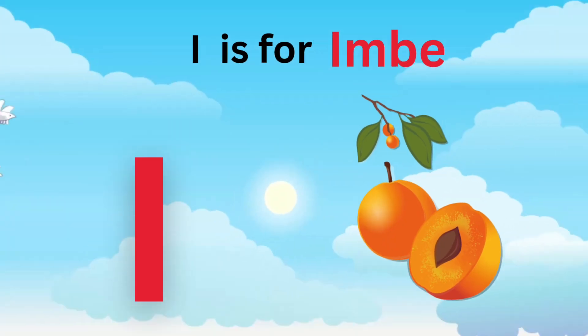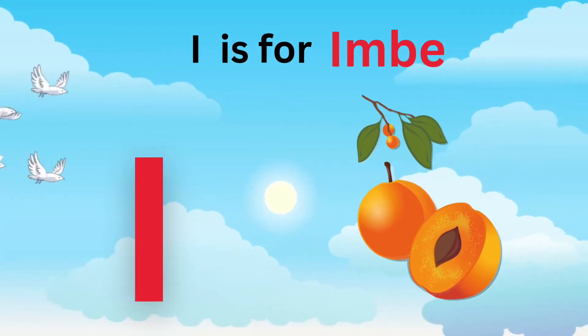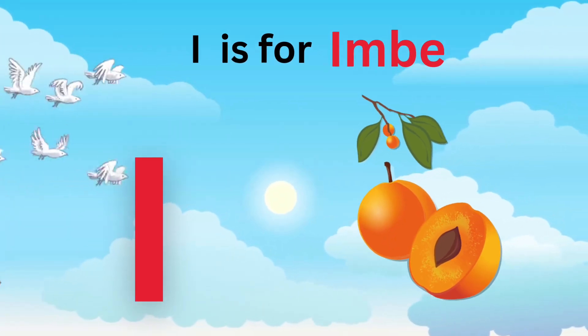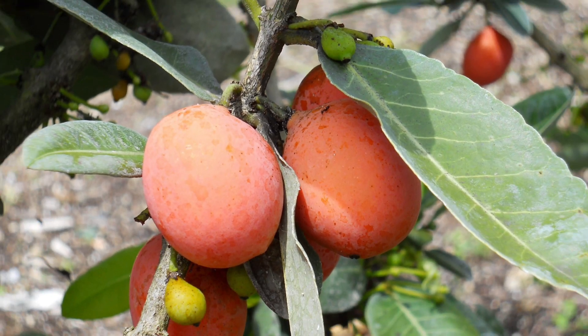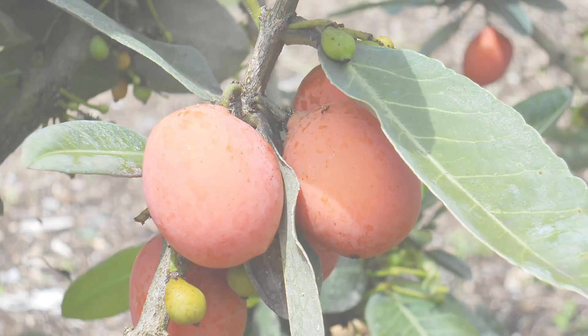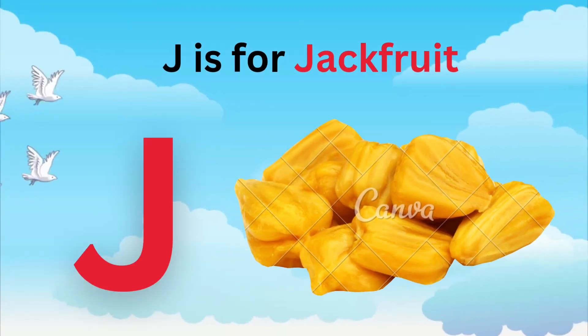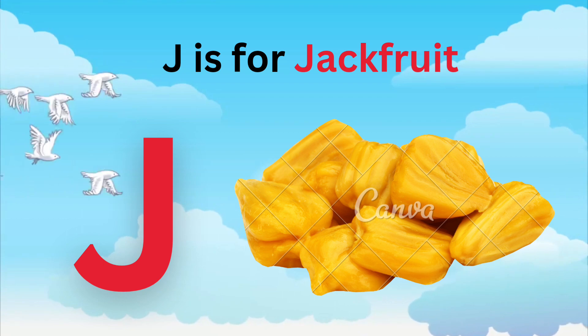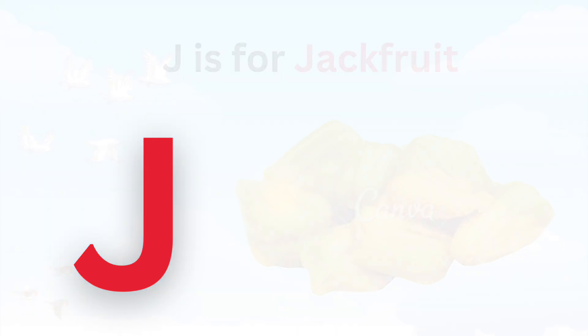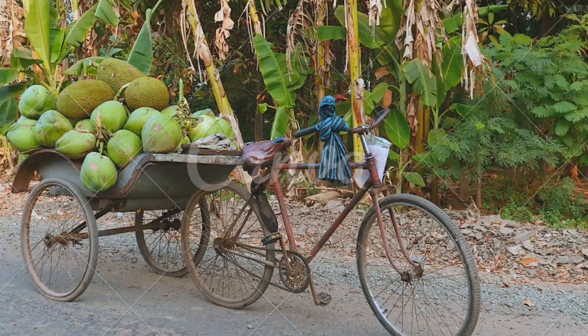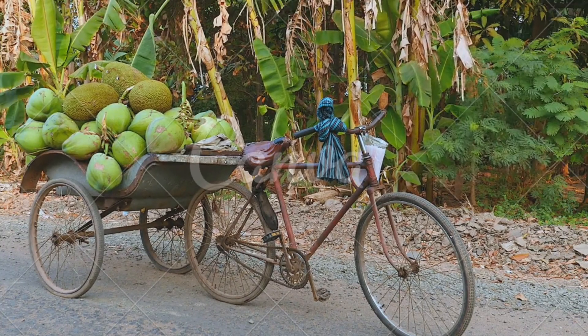I is for Em. B, E, E, E. I is for Em. B, E, E, E. J is for Jackfruit. G, G, Jackfruit. J is for Jackfruit. G, G, G.